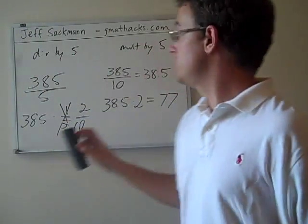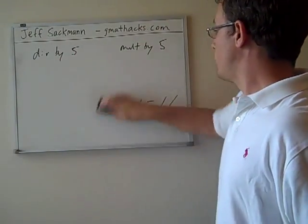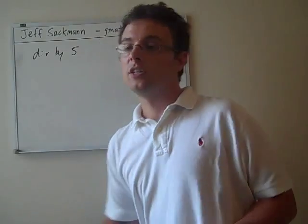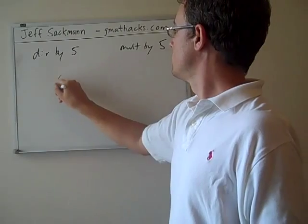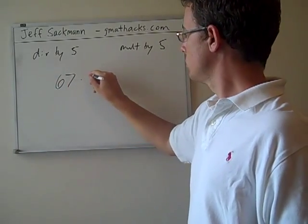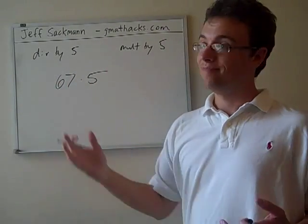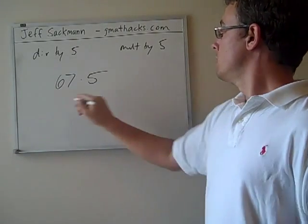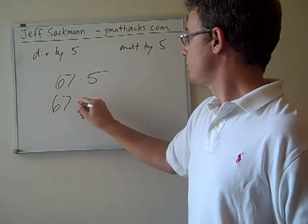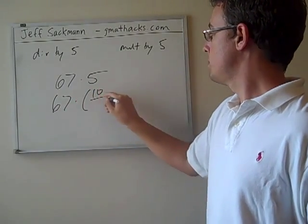The same strategy, in essence, is how we quickly multiply by 5. So when we're multiplying by 5, we're taking a number, let's say, 67. 67. Again, that isn't something I can do in my head. It might take a minute to work it out on paper. So I'm going to replace that 5 by 10 over 2.